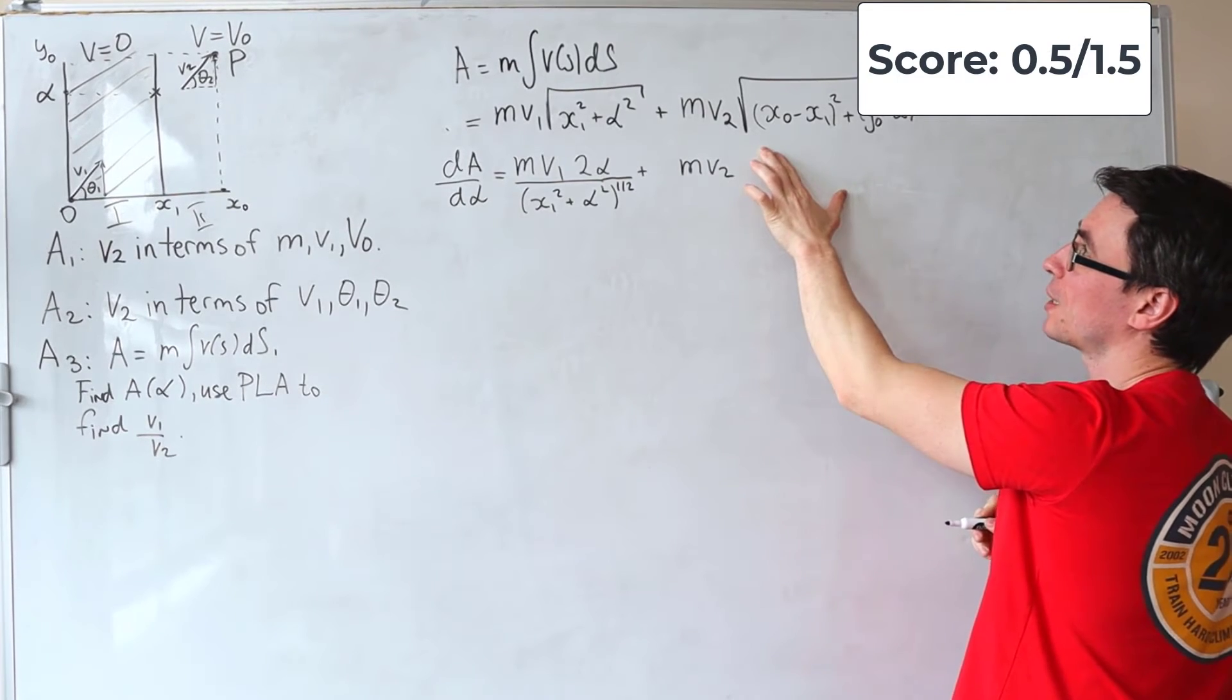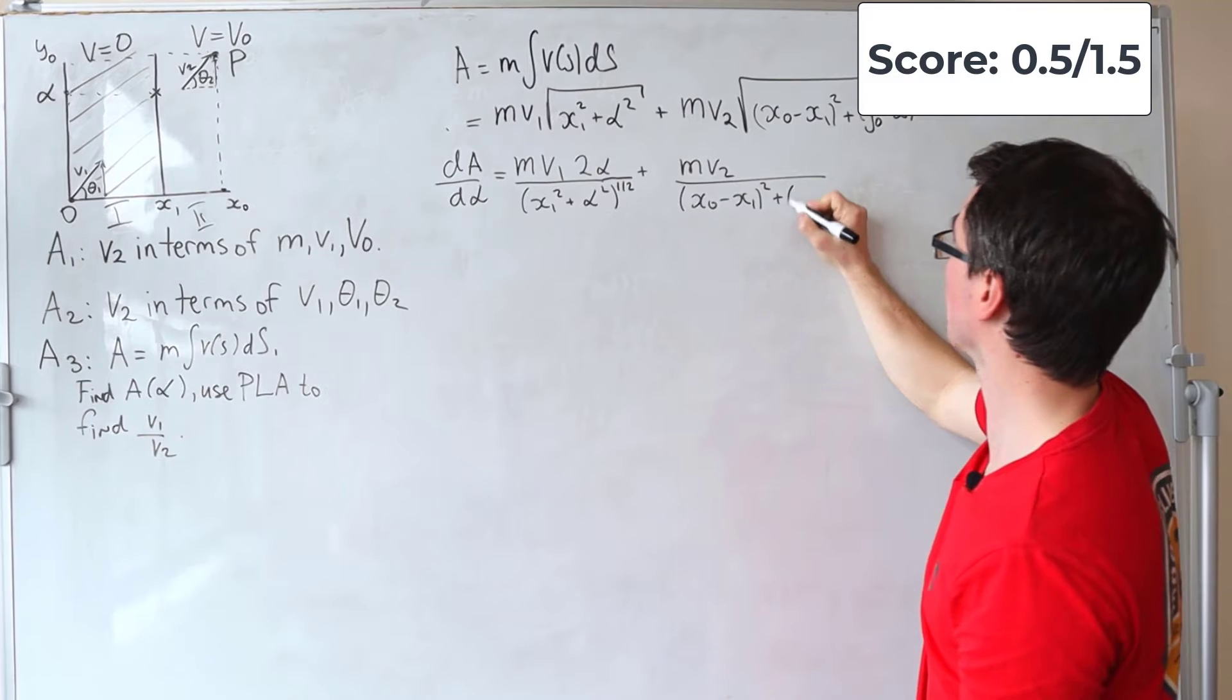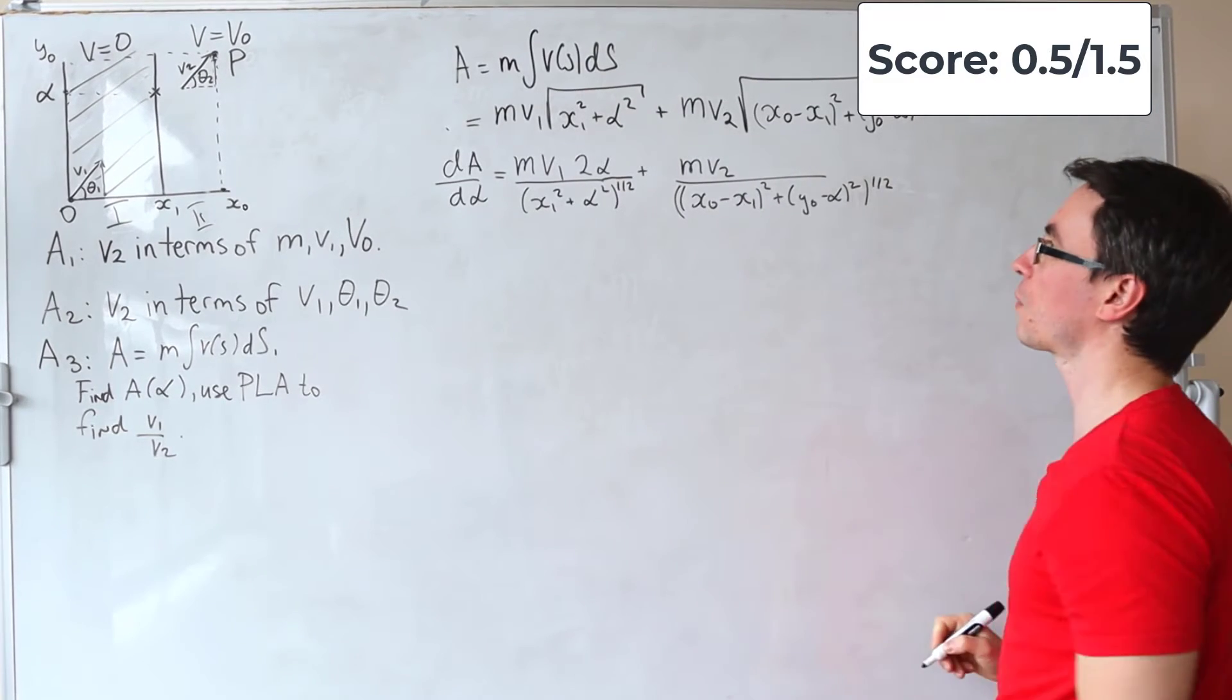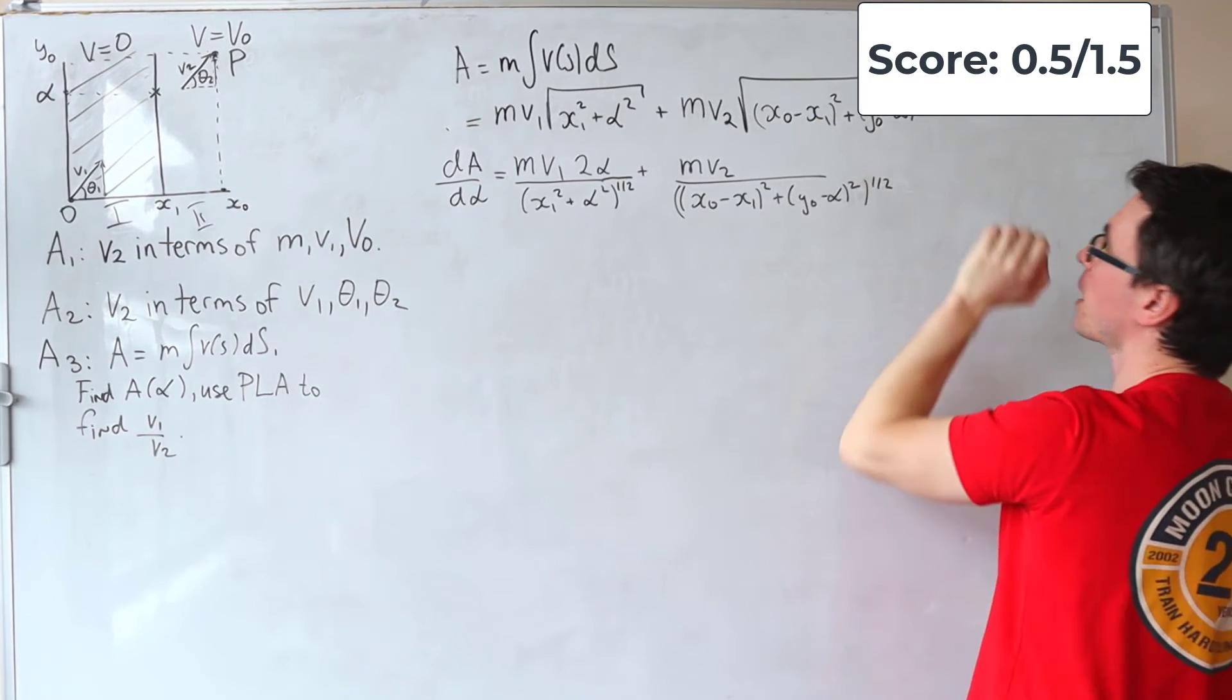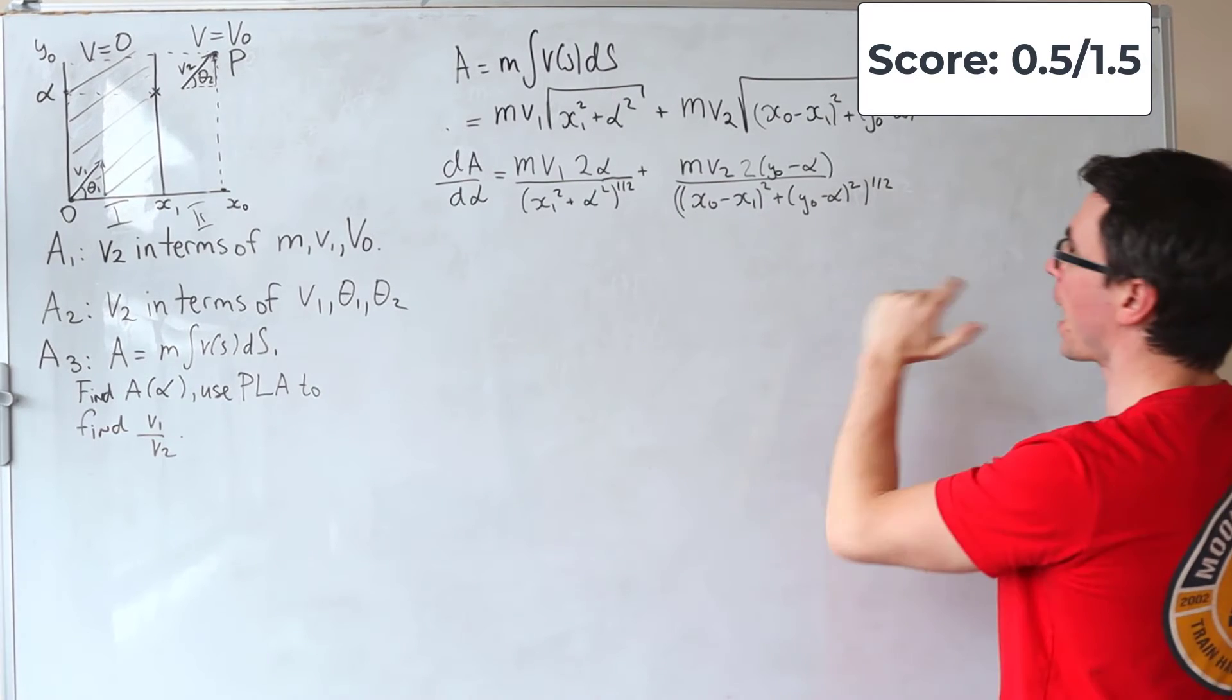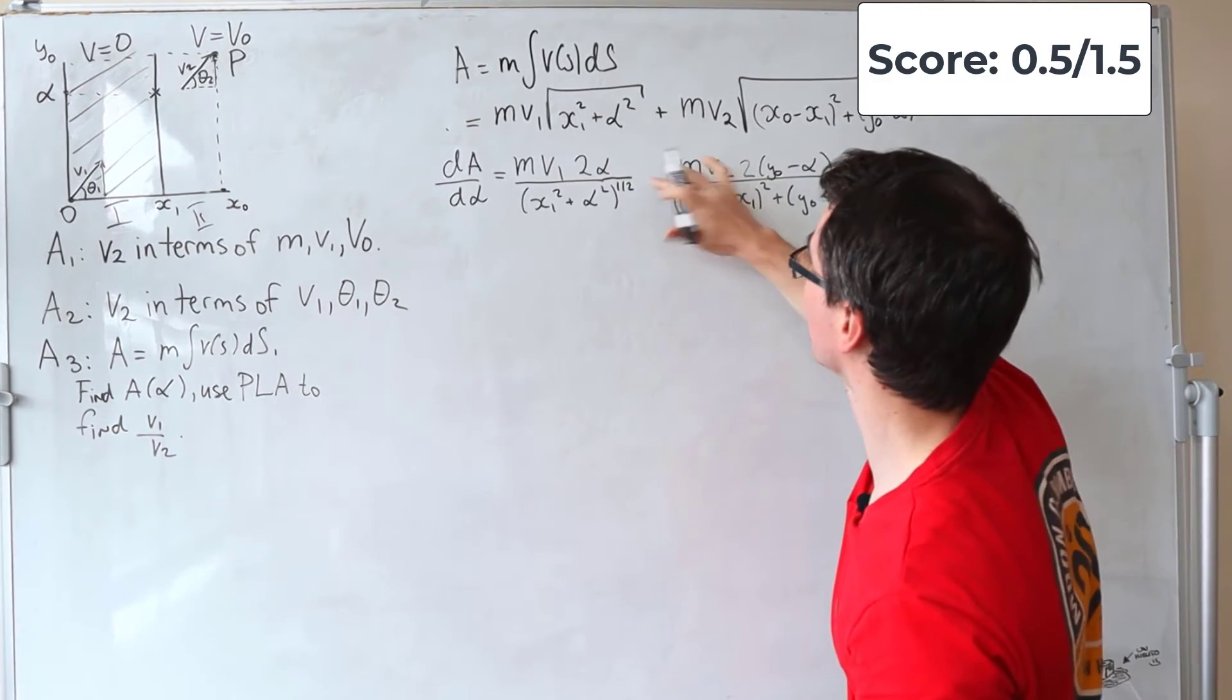And then, we need to differentiate this using the same principle. So, we're going to be dividing by x0, take away x1 squared plus y0, take away alpha squared. And this whole expression is raised to the power of a half. And now, using the chain rule, I need to differentiate the functions of the inside. So, this one here will disappear. And what we're going to get is 2 times y0, take away alpha. And then, applying the chain rule again, this factor of minus alpha needs to be differentiated, which is going to give us a minus sign here.